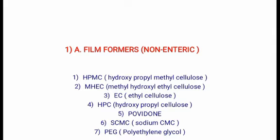The second one is MHEC, that is Methyl Hydroxyethyl Cellulose. It is prepared by reacting alkali-treated cellulose with methyl chloride and then with ethylene oxide. It has similar properties to HPMC, but it is soluble in fewer organic solvents, so it is not used as frequently as HPMC.